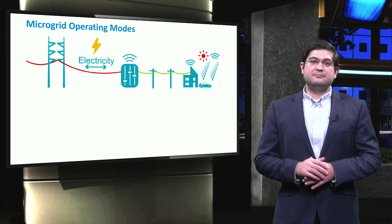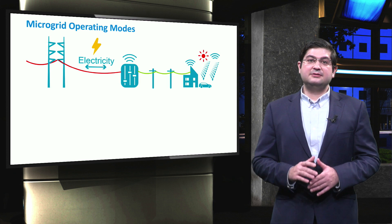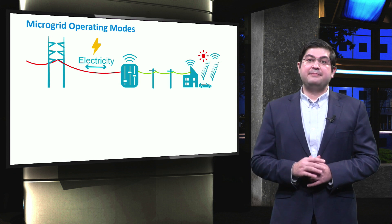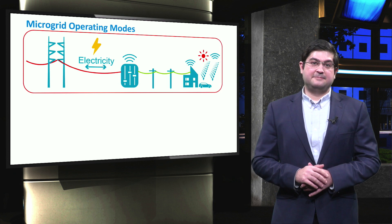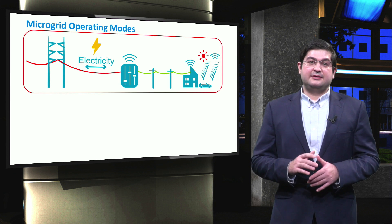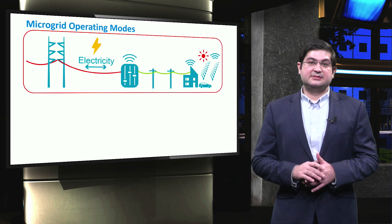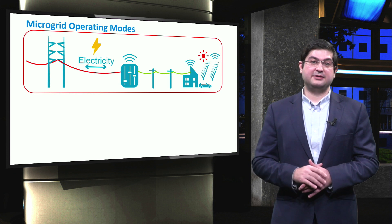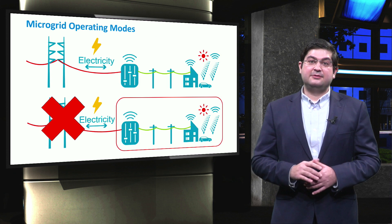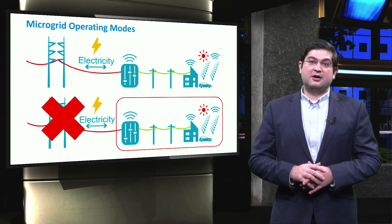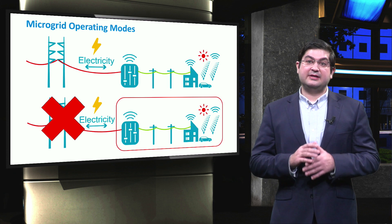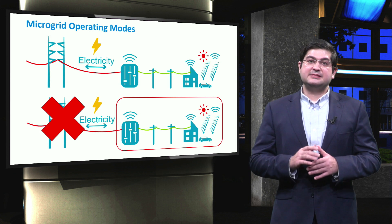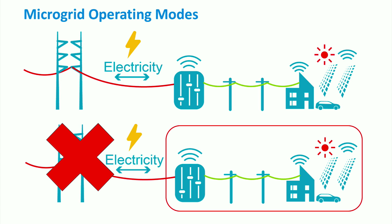The operating mode of microgrids is another determinant factor based on which ancillary services can be classified. During the grid connected mode, some ancillary services like frequency support can be provided by the grid. However, during the islanded operation of a microgrid, typically a wider range of ancillary services shall be simultaneously addressed. During the next videos, we address ancillary services in microgrids for both grid connected and islanded operating modes.